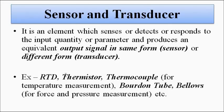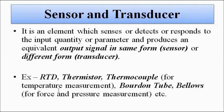The sensor or transducer detects any change in the parameter of interest. For example, for temperature measurement we can use RTD, thermistor, or thermocouple. For RTD and thermistor, temperature change is converted into resistance change; for thermocouple, temperature change is converted into a potential difference. For force and pressure measurement, we can use a Bourdon tube or bellows, in which force or pressure is converted into linear or angular displacement. Various other instruments employ various types of sensors and transducers.